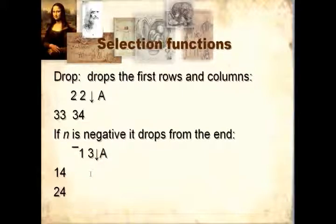Drop is similar on matrices — you drop the rows and the columns. In this case we're dropping the first two rows and the first two columns, and we end up with a 1 by 2. If n is negative, we drop from the end. Here we drop the last row and the first three columns, and we end up with a 2 by 1.